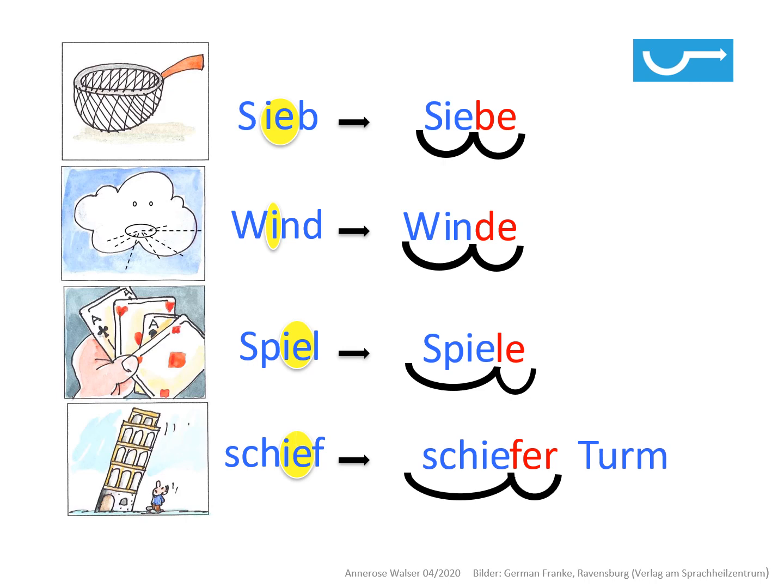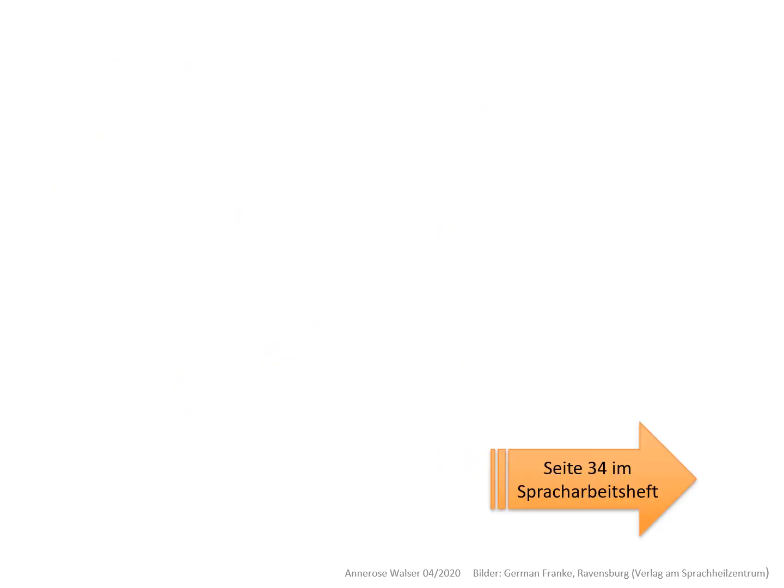Diese und weitere Beispiele findest du auf der Seite 34 in deinem Spracharbeitsheft. Jetzt ist es an der Zeit, diese Seite 34 zu bearbeiten. In der Aufgabe 1 kommen dann noch zwei weitere Wörter wie Dieb und Bild. Da erklärt man es dir noch einmal. Und dann in der Aufgabe 1 ist der Stier, der schiefe Turm, der Wind, das Sieb, das Schild und das Spiel, das du zuerst in der zweisilbigen Form schreiben sollst. Und dann kannst du das Wort Stier in der einsilbigen Form richtig aufschreiben.